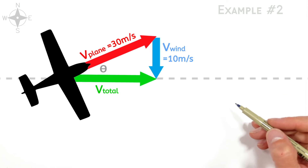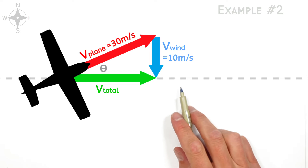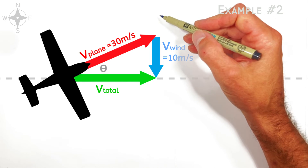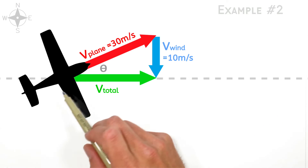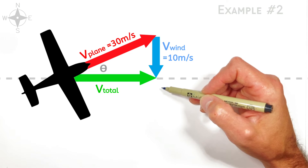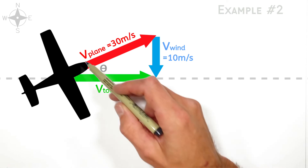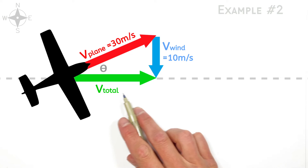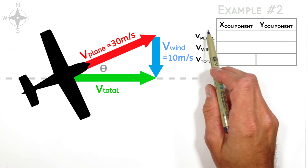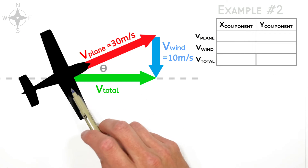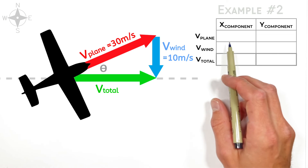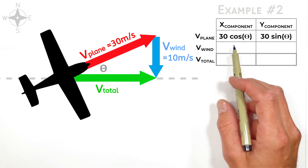The next version of this problem asks: if we wanted our plane to actually have a resultant velocity vector pointed east, which way would the plane have to point? If the airplane is going to be pushed south by the wind, it's going to have to point itself a little bit north to fight that southerly push. We're solving for the angle the plane would have to point relative to east in order to have a resultant vector pointed directly east. Setting up our table again, the plane travels 30 meters per second but we don't know its direction, so the horizontal component is 30 cosine theta and the vertical component is 30 sine theta.